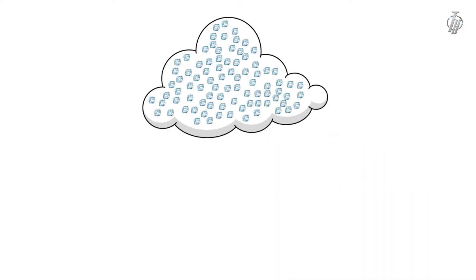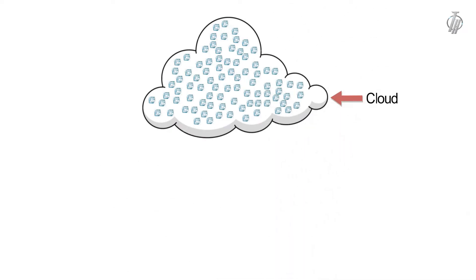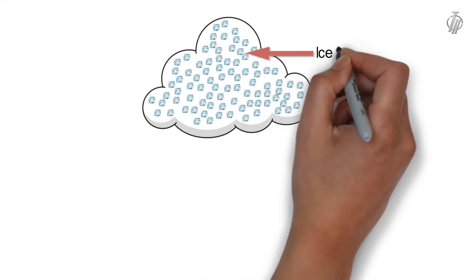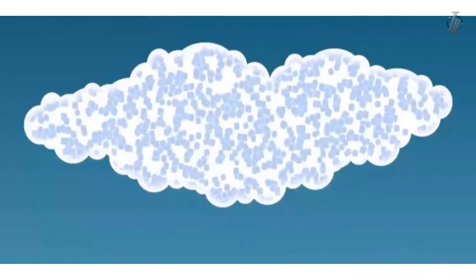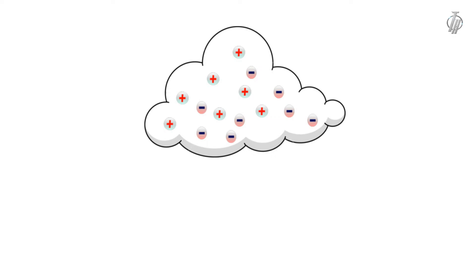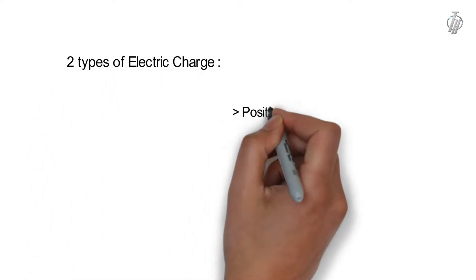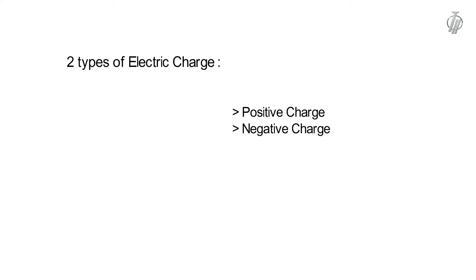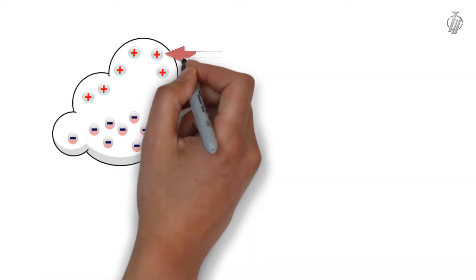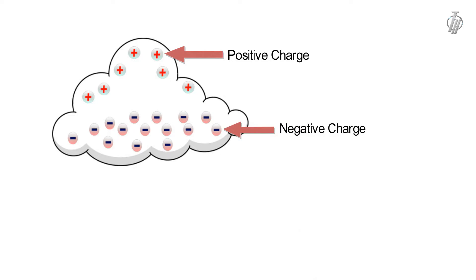So in real life, what is lightning? When clouds gather in the sky, inside those clouds there are many small pieces of ice. These ice pieces collide with each other. As a result of this collision, electric charge is created inside the cloud. This electric charge has two types — positive charge and negative charge. The upper part of the cloud accumulates positive charge and the lower part accumulates negative charge.